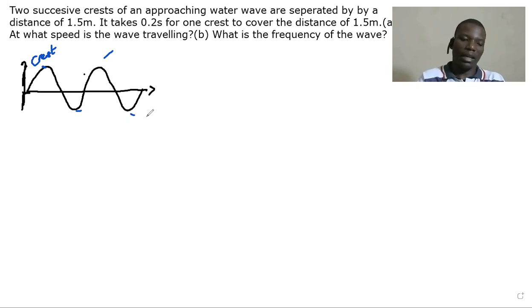So now we are told that this distance from this crest to this crest is 1.5 meters. So if you remember, this distance from one crest to another crest is what is called the wavelength. Wavelength is usually written as lambda. So wavelength, which is the same as distance, is 1.5 meters.